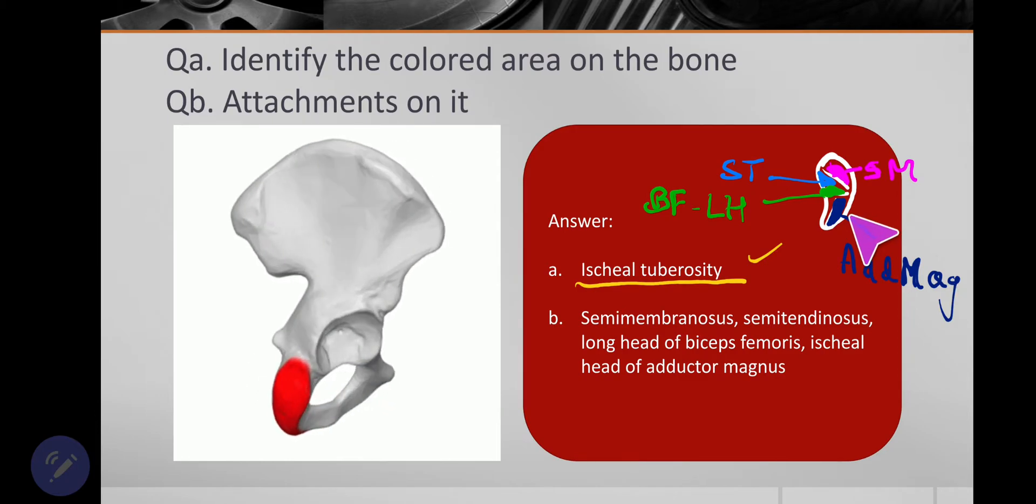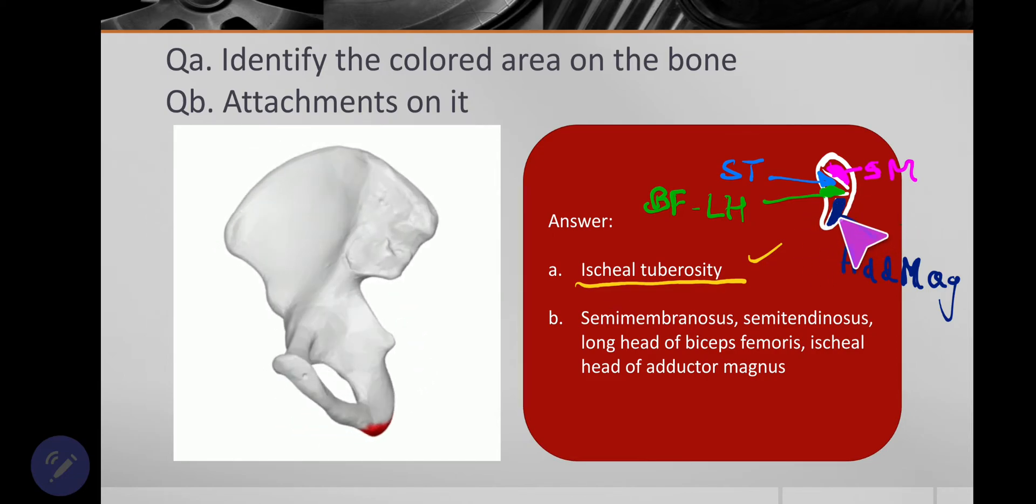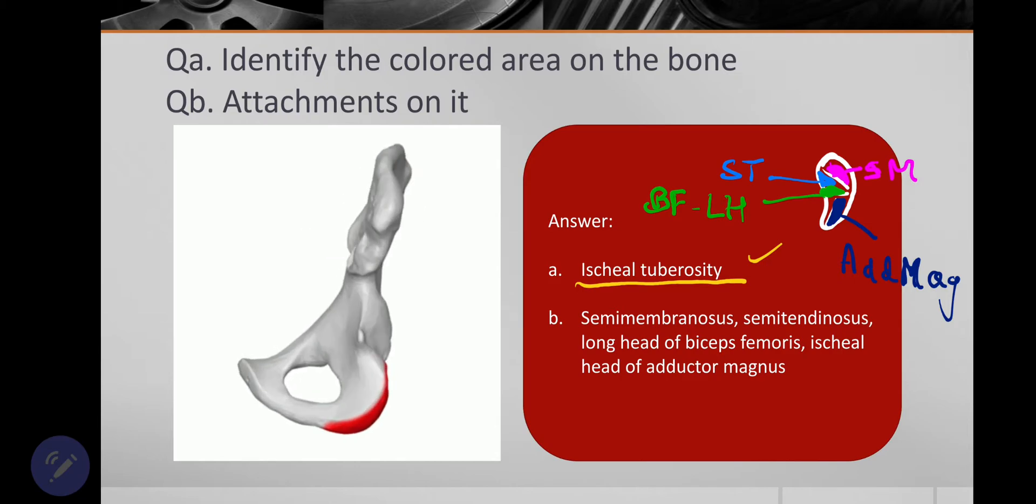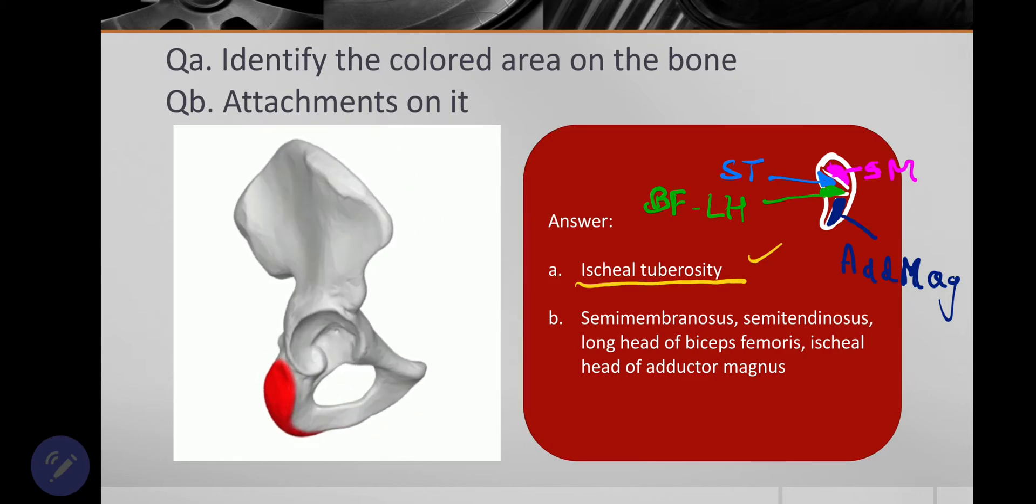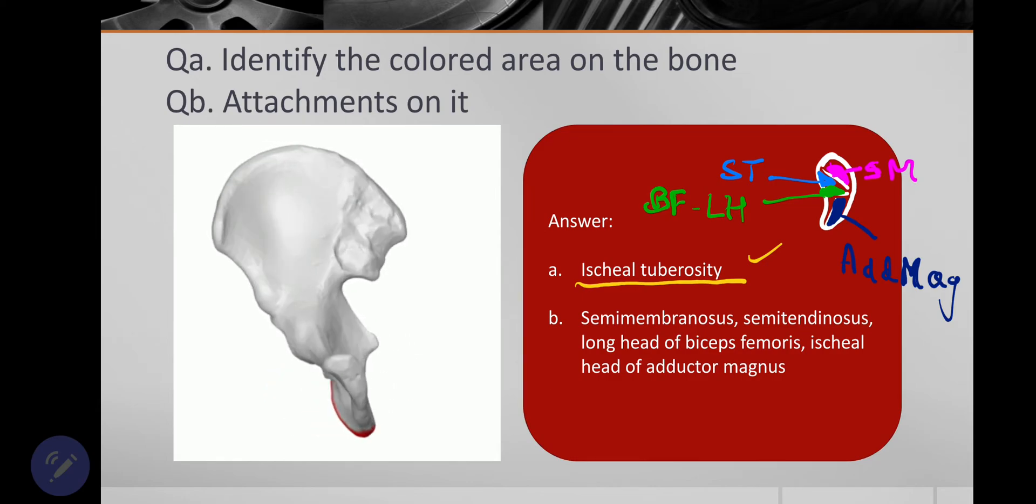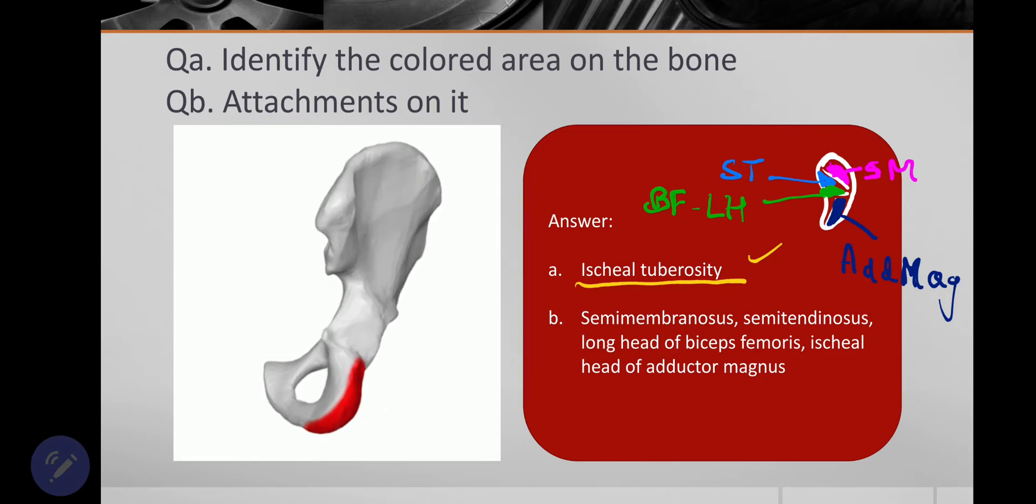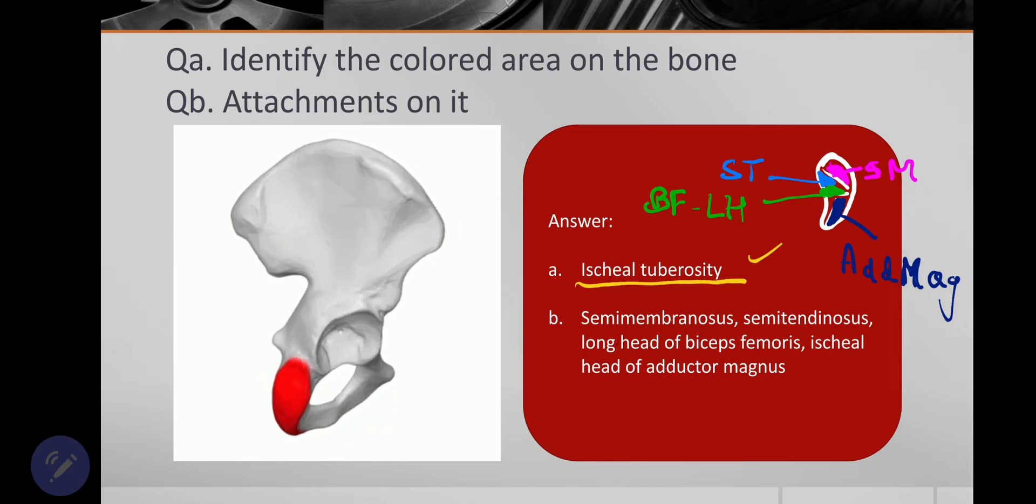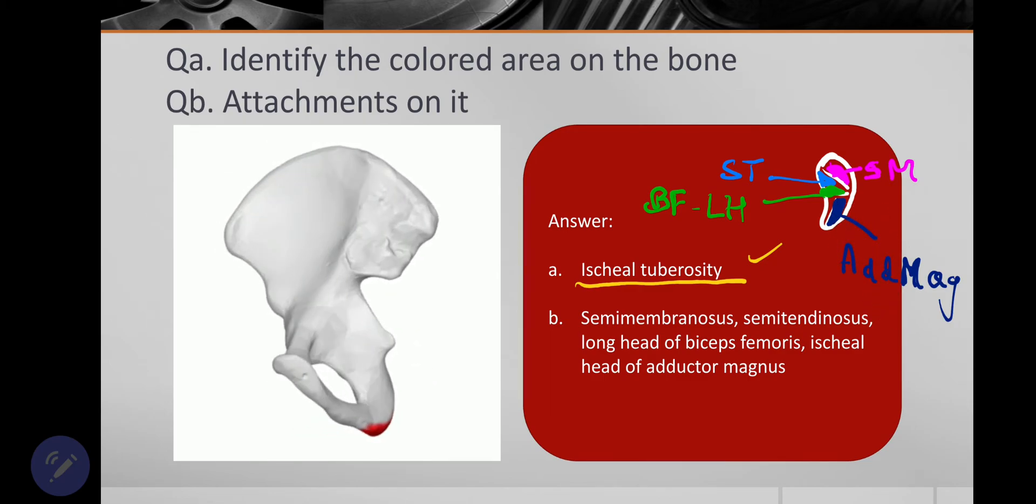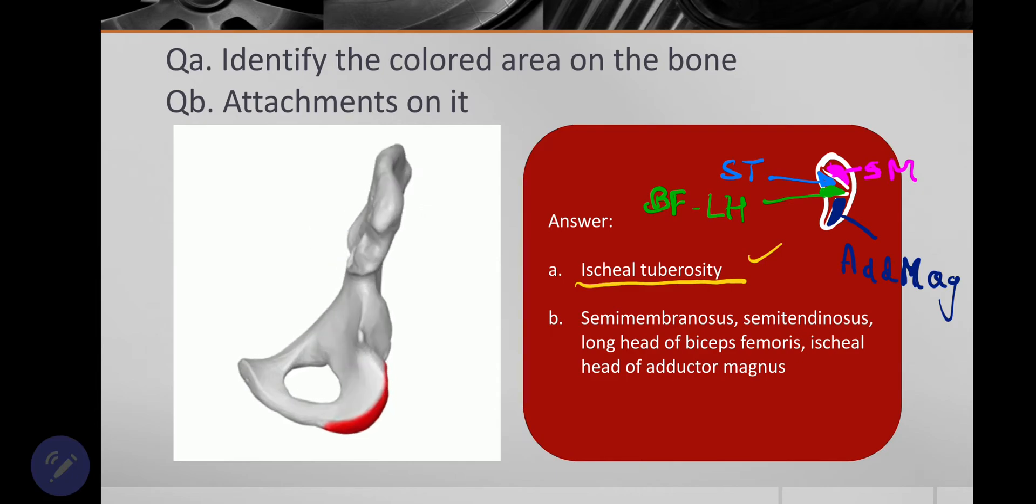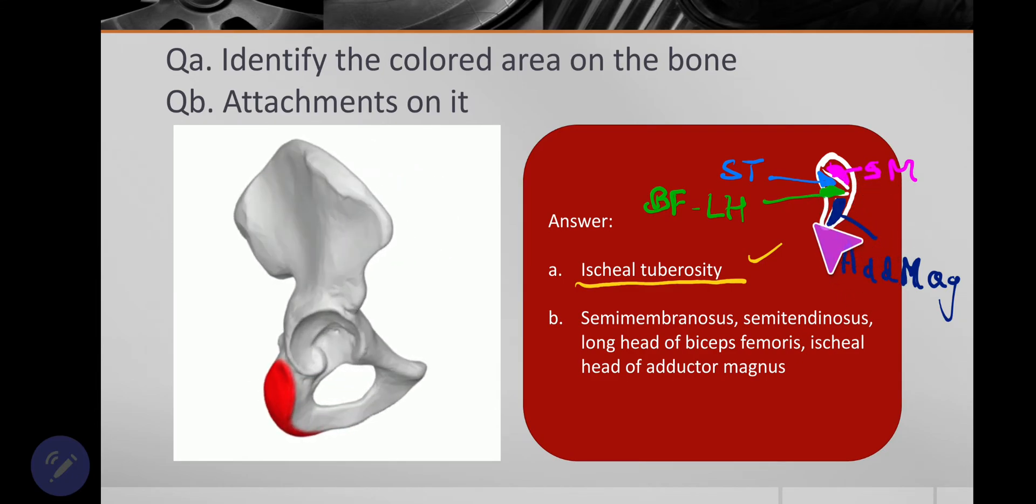Hybrid, why? Because it partly takes origin from ischial tuberosity and partly from the pubic ramus, ischiopubic ramus. So the pubic head is innervated by obturator nerve and the fibers of it are obliquely or transverse directed fibers. They are inserting in upper portion of the linea aspera and their action is adduction. Ischial fibers, they will insert in the lower portion of the linea aspera, reaching up to the adductor tubercle.